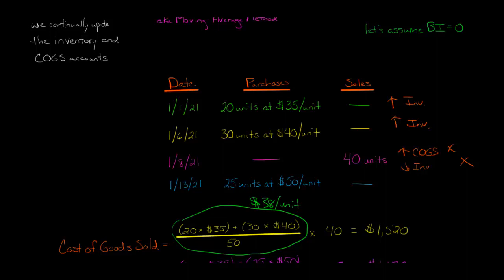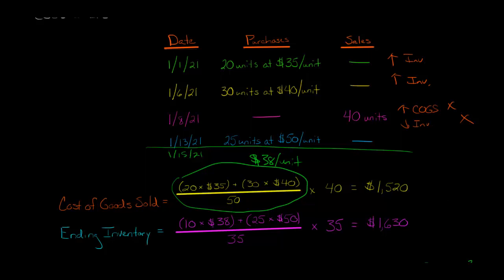Let's move ahead — now we've got our cost of goods sold. At the end of the period, let's say January 15th, we have to figure out the ending inventory. Now when we go to figure the ending inventory as of January 15th, we do care about the 25 units purchased on the 13th. There were 75 units total purchased, and we sold 40, so there are 35 in ending inventory.